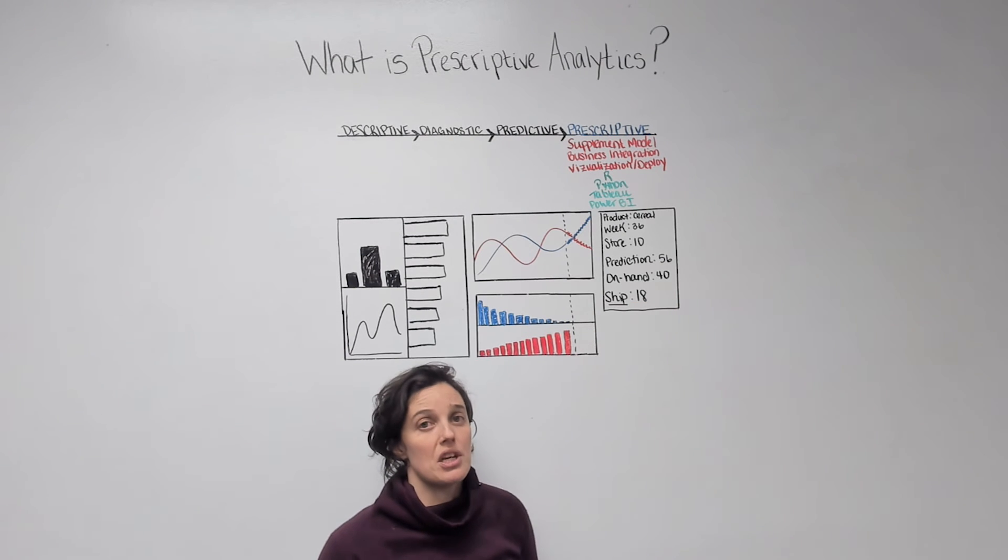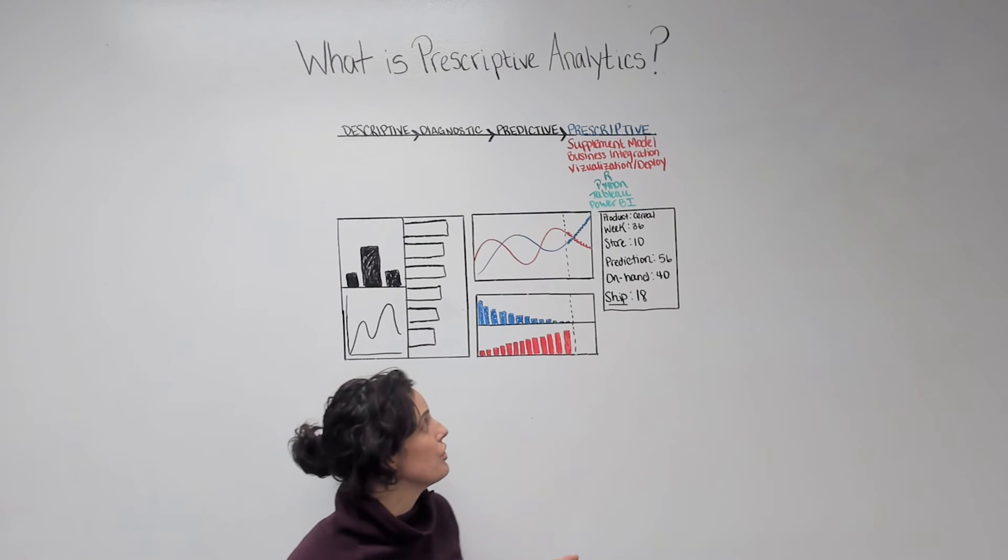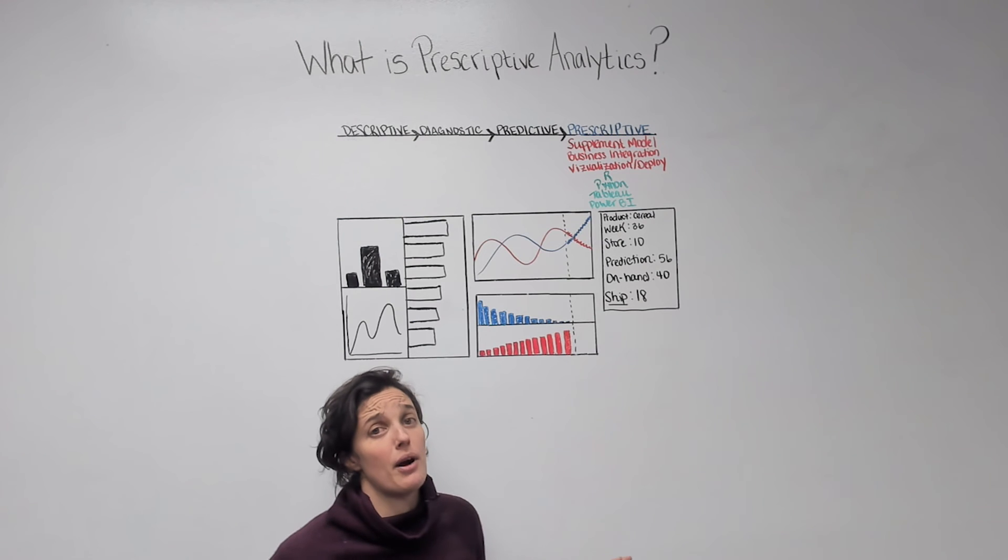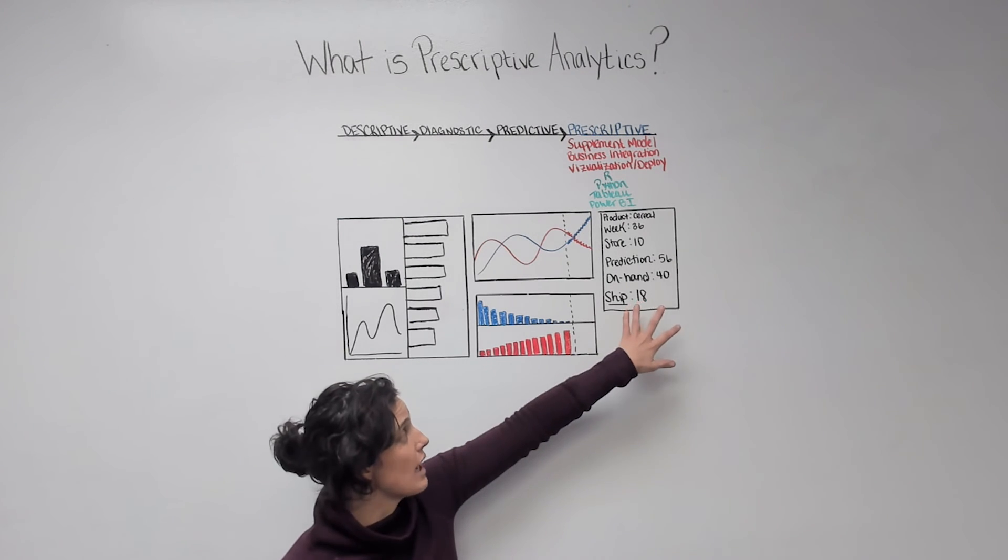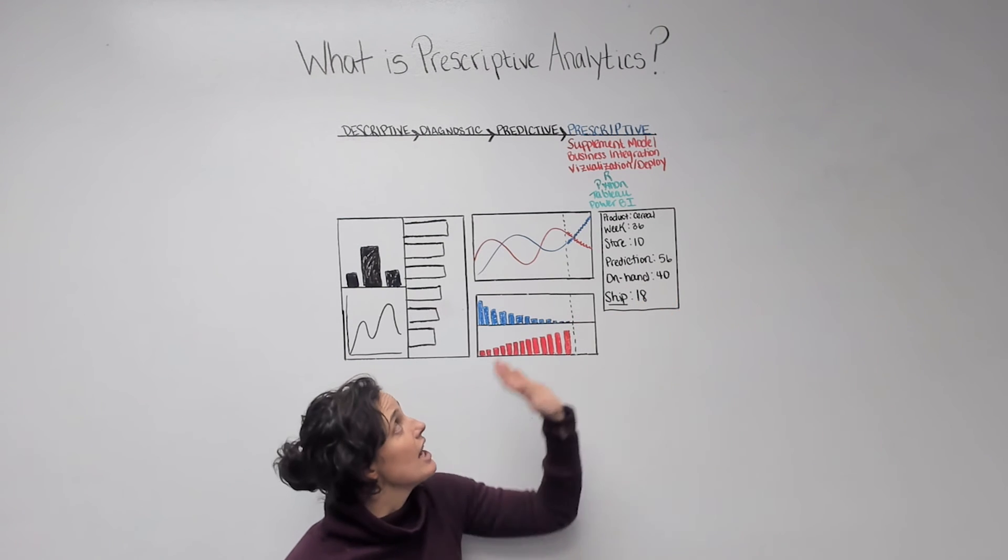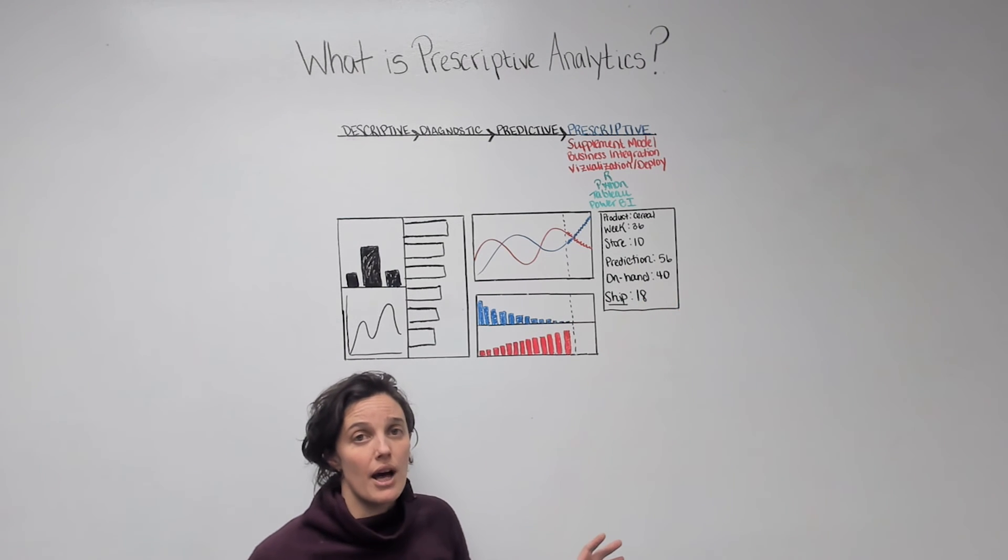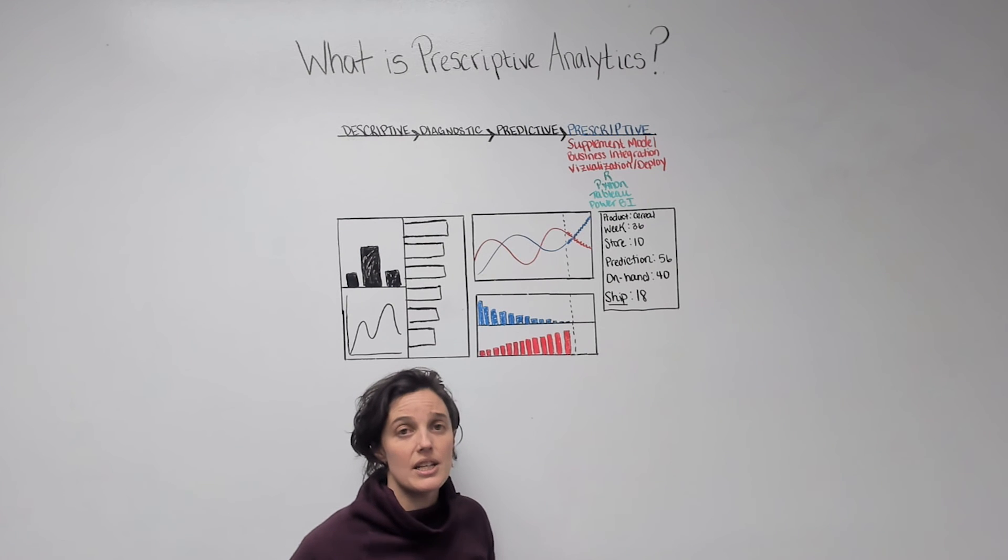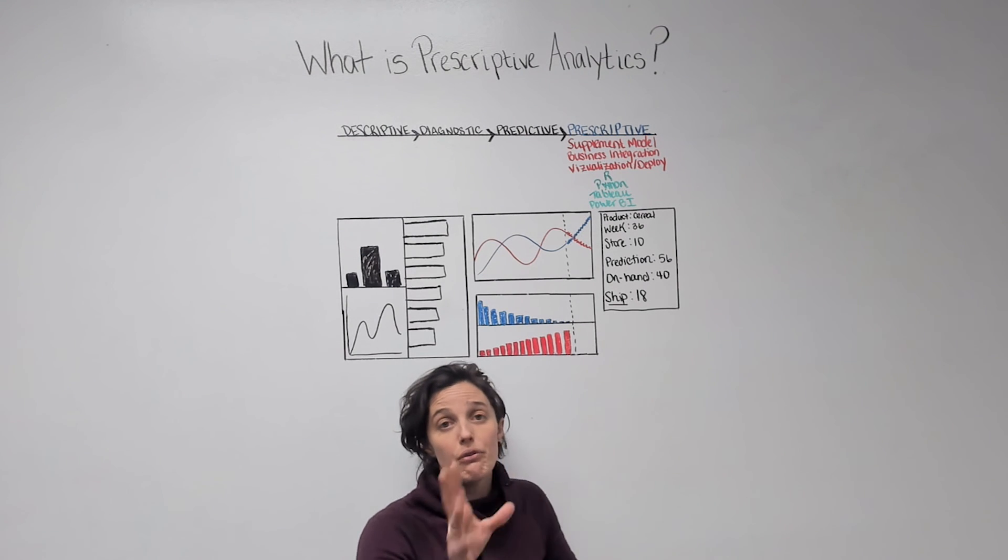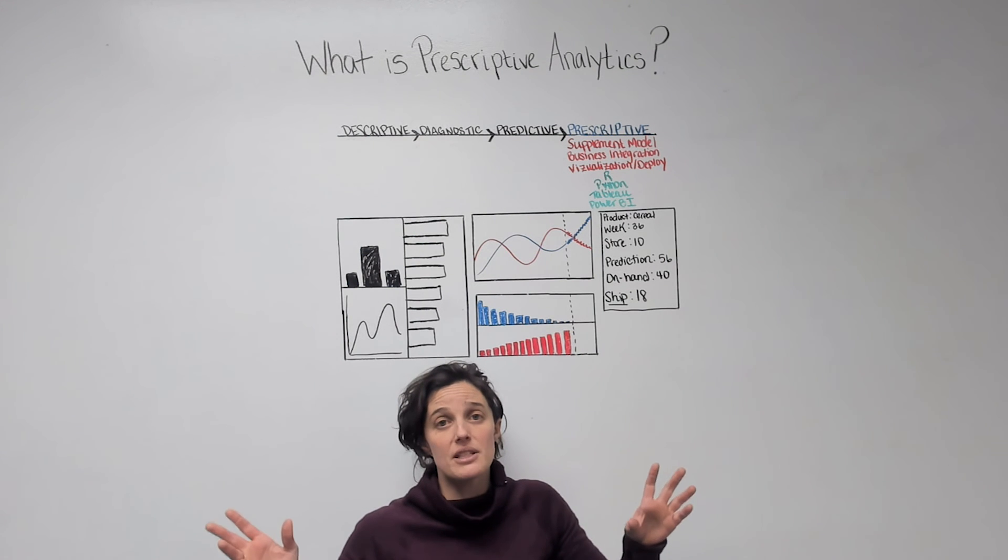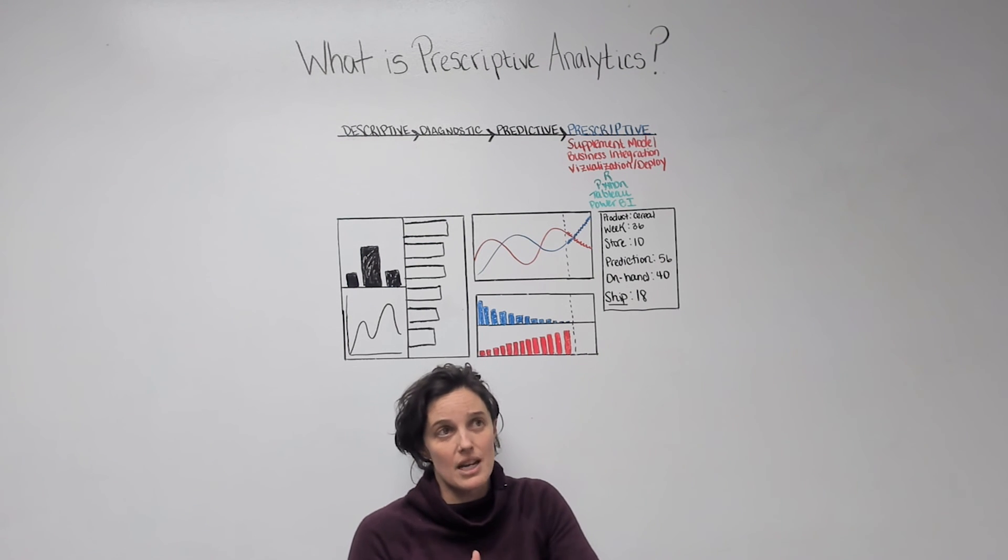We also know that this particular business doesn't want to ever run out of products because to them that means they're losing revenue. So we want a buffer of that. So we decide we're going to ship 18. And if this is really a good prescriptive model, then this is seamlessly integrated into the business so that these actions are just happening. So it frees you up to make all kinds of other business decisions that are very important and more insightful.